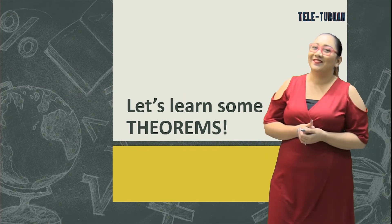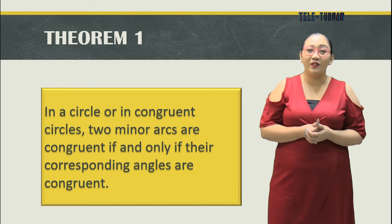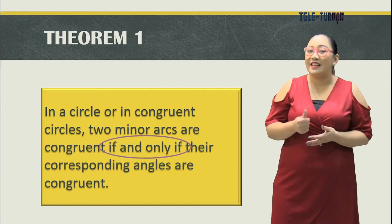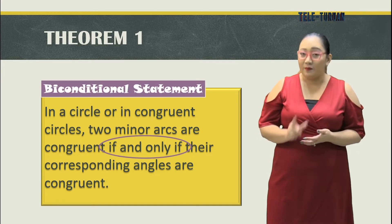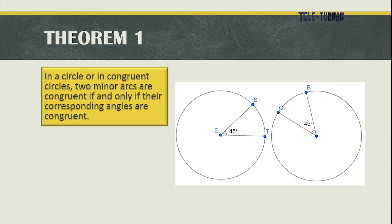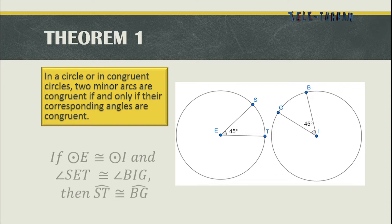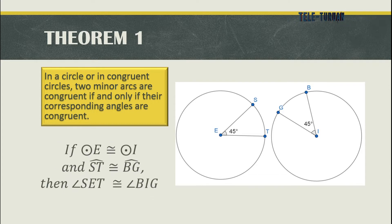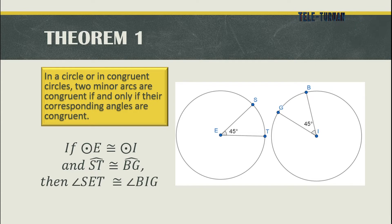Let's start with theorem number one. In a circle, or in congruent circles, two minor arcs are congruent if and only if their corresponding angles are congruent. Notice the special phrase "if and only if" — this means our theorem is a bi-conditional statement, meaning the if-then statement and its converse are both true. For example, if angle SET is congruent to angle BIG, then arc ST and arc BG are also congruent. Conversely, if arc ST is congruent to arc BG, then angle SET and angle BIG are congruent as well.